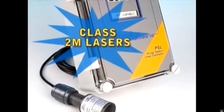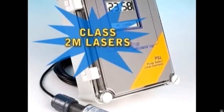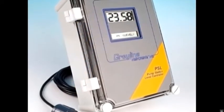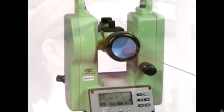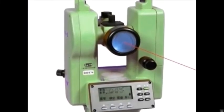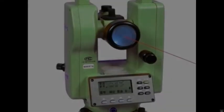Class 2M laser systems emit in the visible portion of the spectrum, 400 to 760 nanometers, and eye protection is normally afforded by the human blink reflex, otherwise known as aversion response, for unaided viewing. However, a Class 2M laser is potentially hazardous if viewed with optical aids.